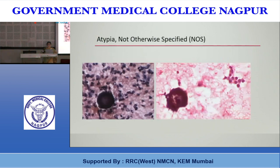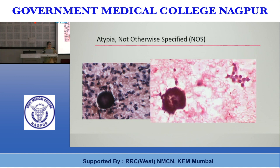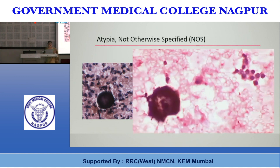Psammomatous calcification in the absence of nuclear features of papillary carcinoma is best classified as AUS/FLUS, but they must be very characteristic lamellated bodies. Lamellar bodies of inspissated colloid with radial cracking can sometimes simulate psammoma bodies — these are not true psammoma bodies. You must see nice lamellated concretions. When you see cracking and dense calcified structures along with groove nuclei, you can use the AUS category.